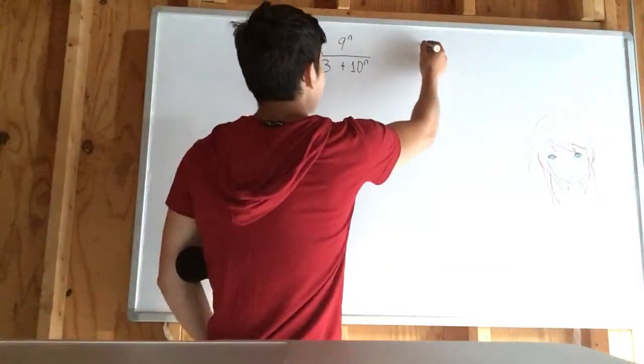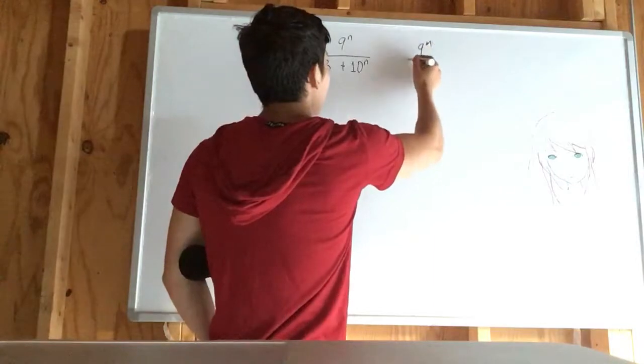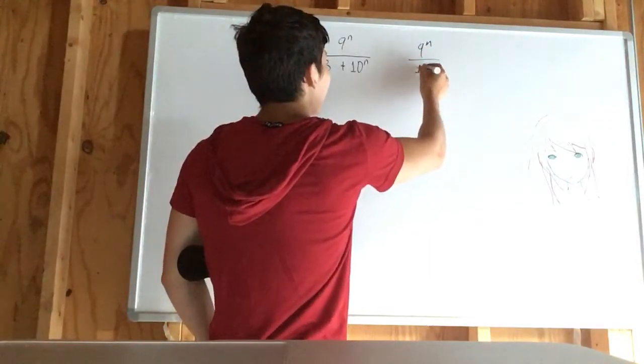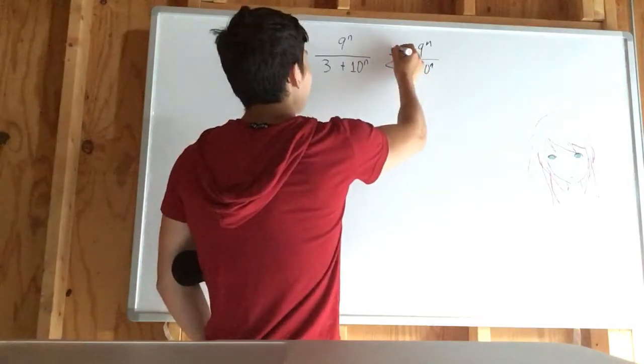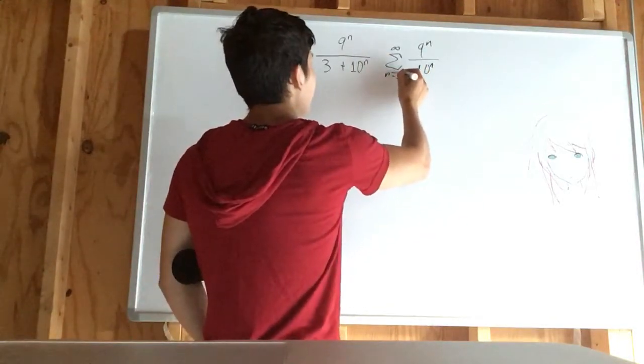We could compare it to something very similar, which is if we had 9^n over 10^n for our series, from n equals 1 to infinity.